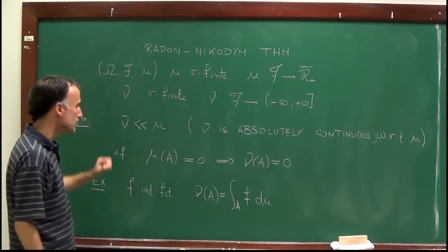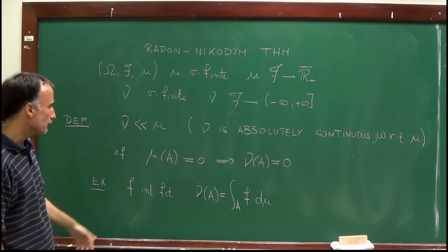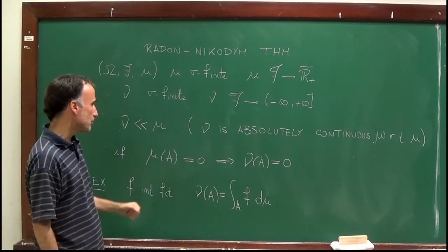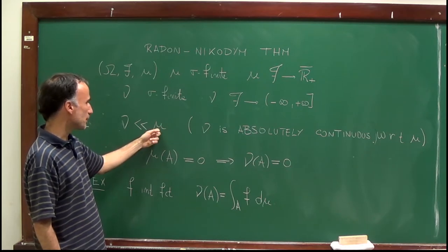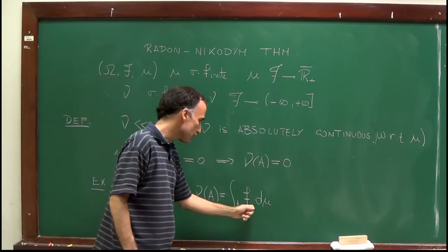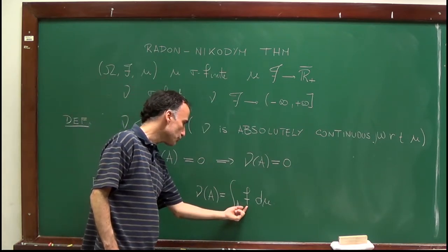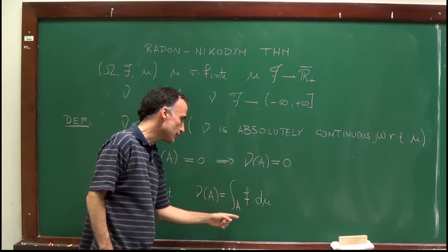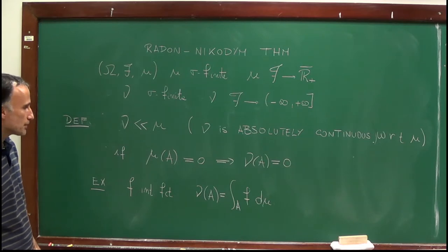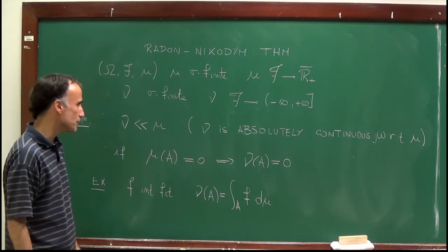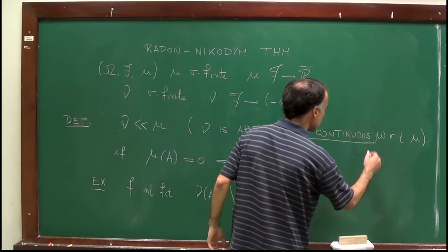The Radon-Nikodym theorem is the converse: if nu is absolutely continuous with respect to mu, we will find a function F which allows you to represent nu as this integral with respect to that function F. So this is one of the assertions of the Radon-Nikodym theorem. This is the first concept: absolute continuity.